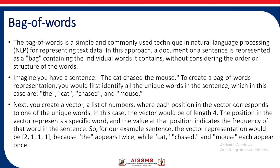Imagine you have the sentence: 'The cat chased the mouse.' To create a bag of words representation, you first identify all unique words in the sentence: the, cat, chased, mouse. Next, you create a vector where each position corresponds to one of the unique words. In this case the vector would be of length 4. The value at each position indicates the frequency of that word, so the vector would be 2, 1, 1, 1 because 'the' appears twice while 'cat', 'chased', and 'mouse' appear only once.